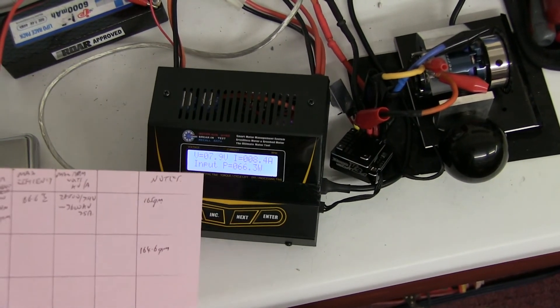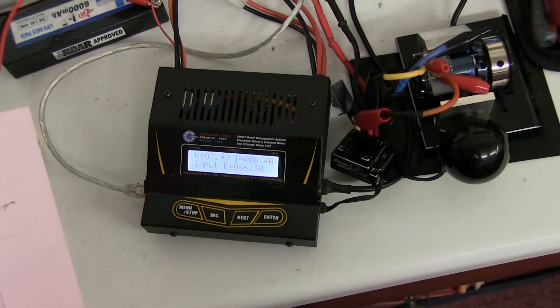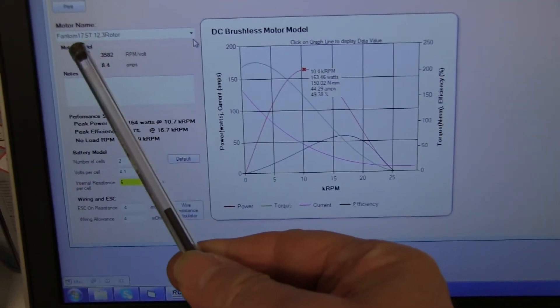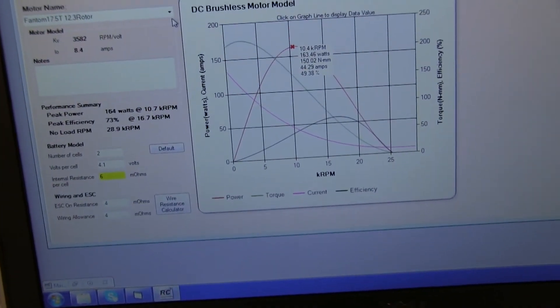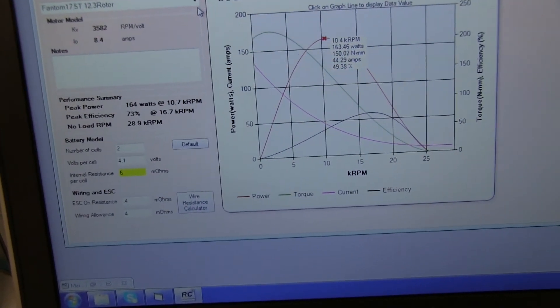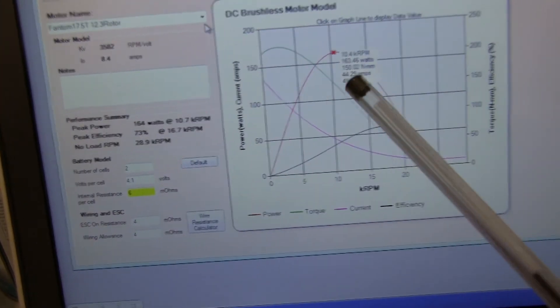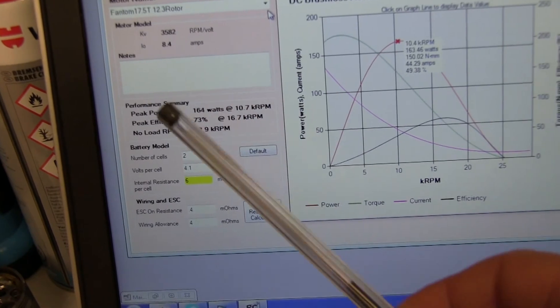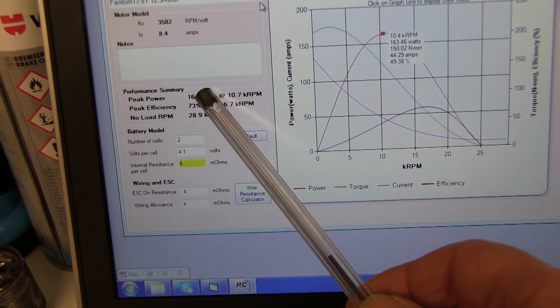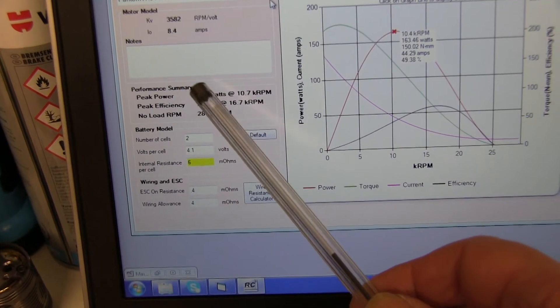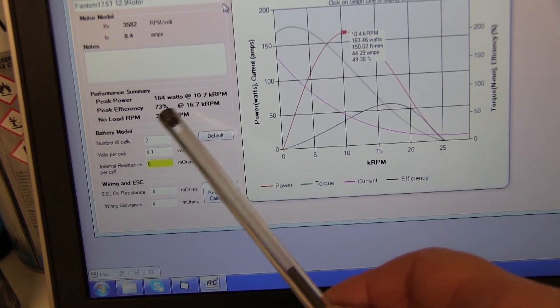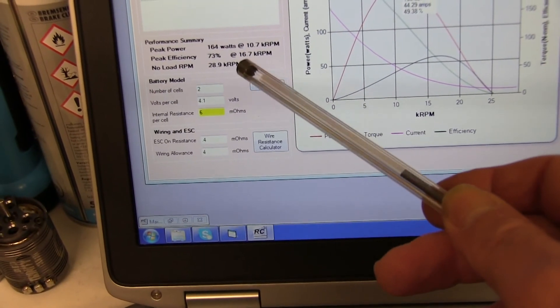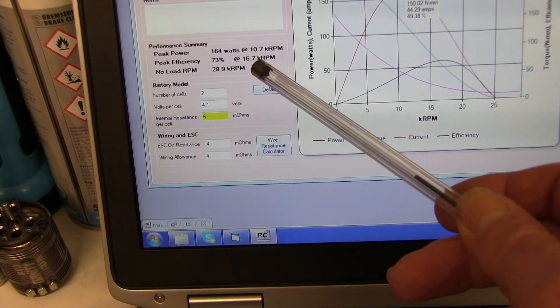I'll put it on the graph and compare. I've graphed up the results from the Phantom 17.5 with a 12.3 rotor. And because it's very similar results on the dyno, the graph's very similar as well. The KV, the watts are close, 164. It was 169 on the dyno. So it's close enough. Efficiency shows up slightly higher at 16,700 revs.